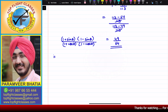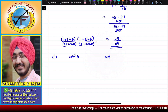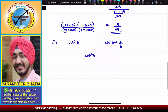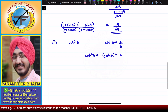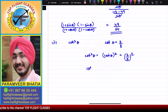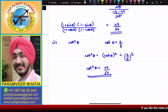Now in the second part, we need the value of cot²θ. The value of cotθ given is 7/8, so cot²θ is nothing but cotθ whole squared. That is (7/8)² = 7² by 8² = 49/64. So cot²θ comes out to be 49/64.